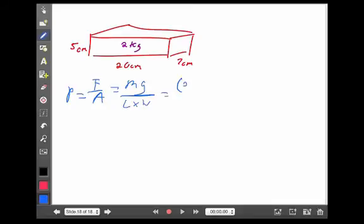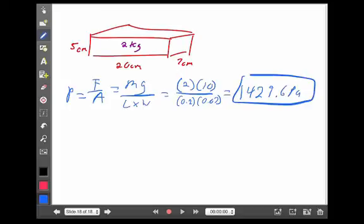So, 2 kilograms, gravity of 10. It's 20 centimeters long, 0.2 meters, and 7 centimeters wide, which is 0.07 meters. So, at this orientation, it has 1,429.6 Pascals of pressure on whatever it would sit on.